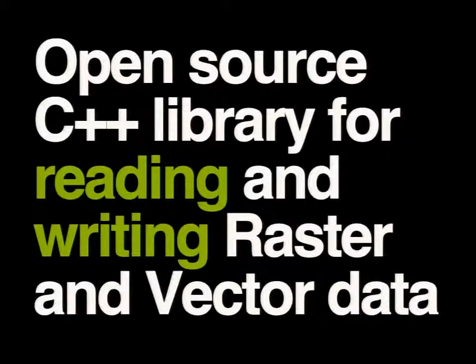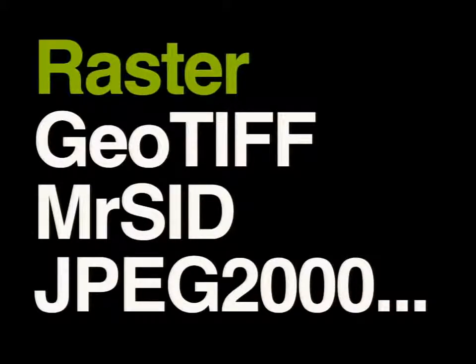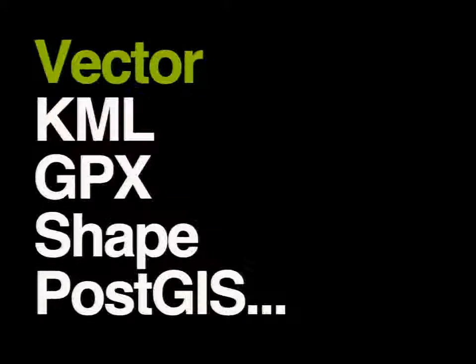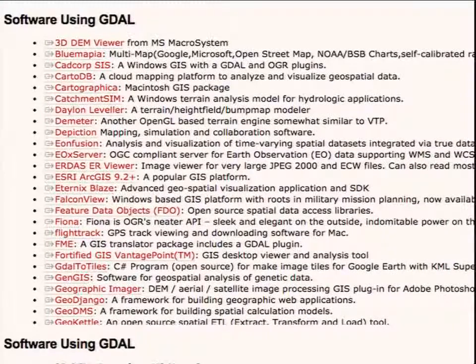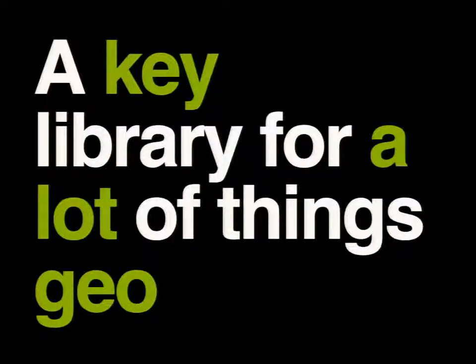If you're not familiar with GDAL, it's a library for reading and writing both raster and vector geospatial data formats. It's written in C++ and is open source. It's really good at supporting lots and lots of formats — altogether, I think it supports over 200 formats. Some of those you might be familiar with: raster formats like GeoTIFF, MrSID, JPEG2000; vector formats like KML, GPX, Shapefile, PostGIS, and a whole bunch of others. It's used in a variety of applications and is basically a key library for a lot of things geo-related.